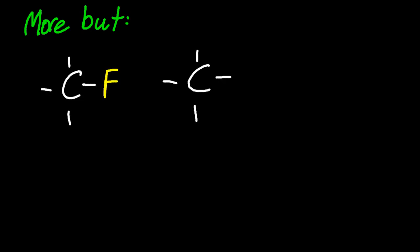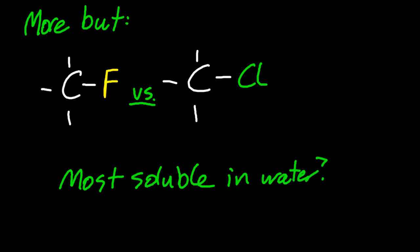Another sophistication: what about fluoromethane compared to chloromethane, which dissolves best in water? Well the more polar one is the fluoromethane. The difference in electronegativity is greater between carbon and fluorine than carbon and chlorine. And we're done.